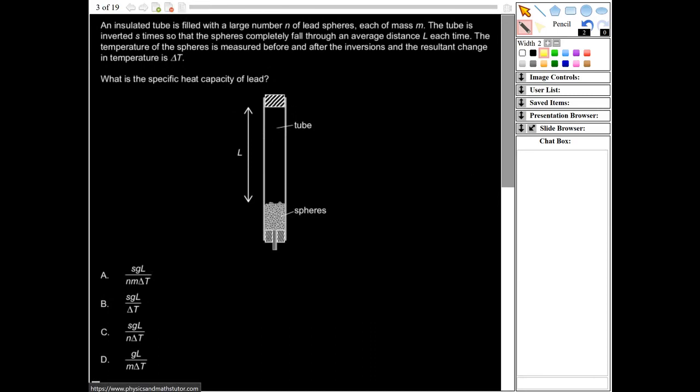Right, and this one, it says an insulated tube is filled with a large number n of lead spheres, each of the mass m. The tube is inverted s times so that the spheres completely fall through an average distance l each time. The temperature of the spheres is measured before and after the inversions, and the resultant change in temperature is delta t. What's the specific heat capacity of lead?